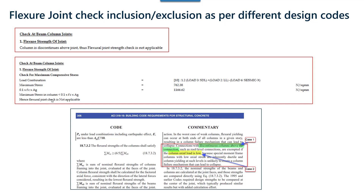For the second criteria, the maximum axial stress from a critical load combination is calculated and compared with the permissible range as mentioned in the code. These are the two criteria of ACI 2019 that are being covered in RCDC.